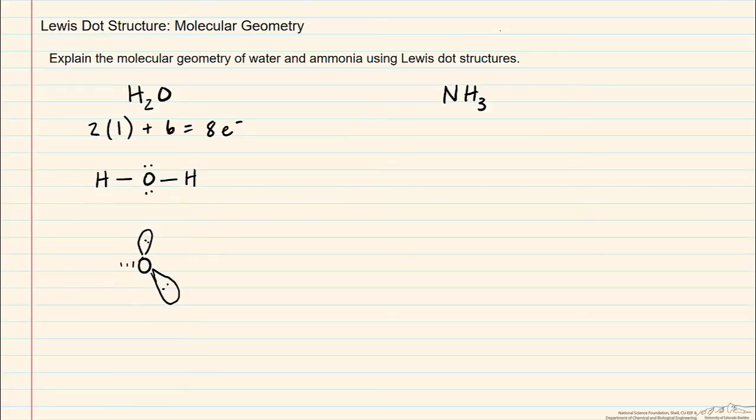And so if you ignore the lone pairs, then we see that a water molecule adopts a bent-type structure rather than a linear structure due to the repulsion between the different substituents on the oxygen atom, whether they be bonds to hydrogen atoms or lone pairs.